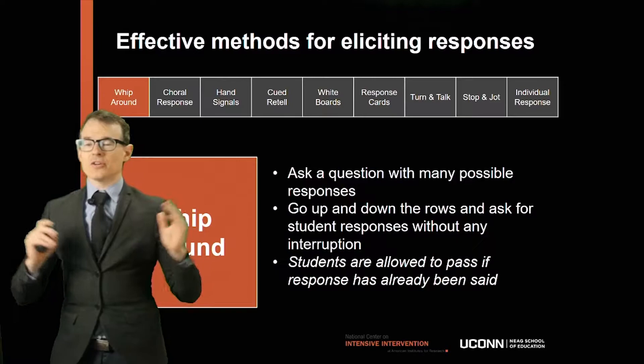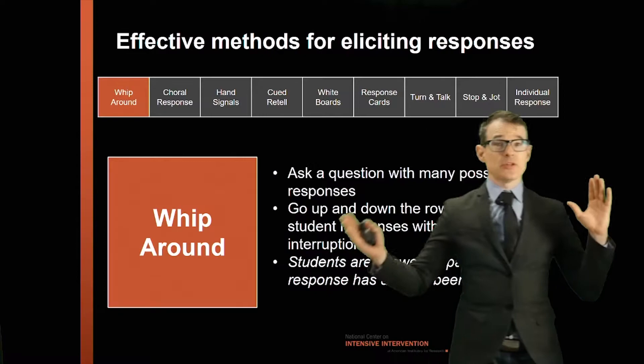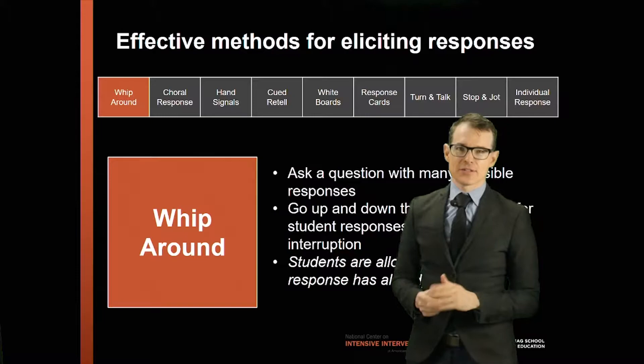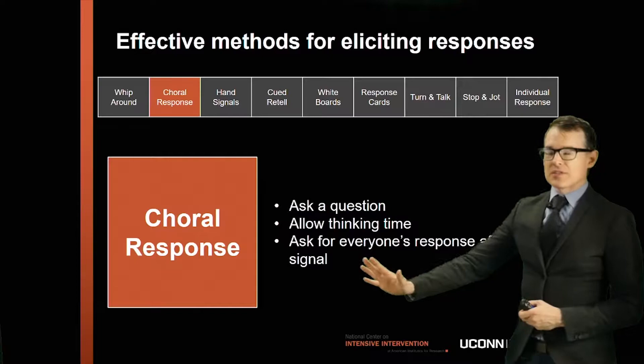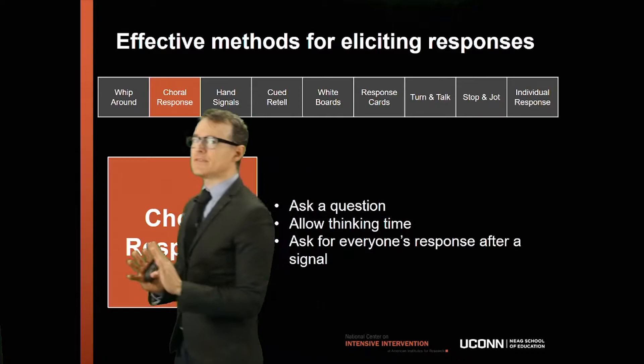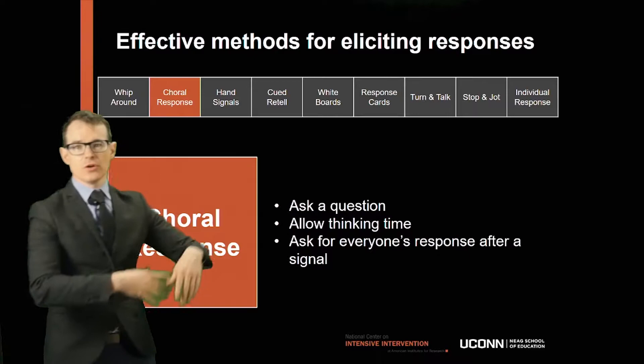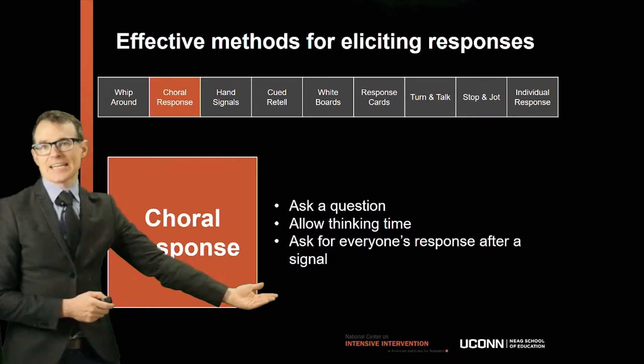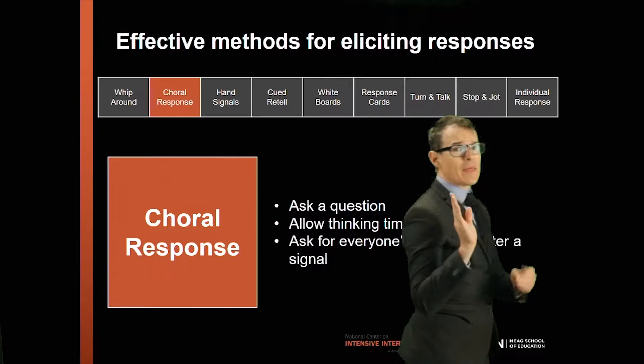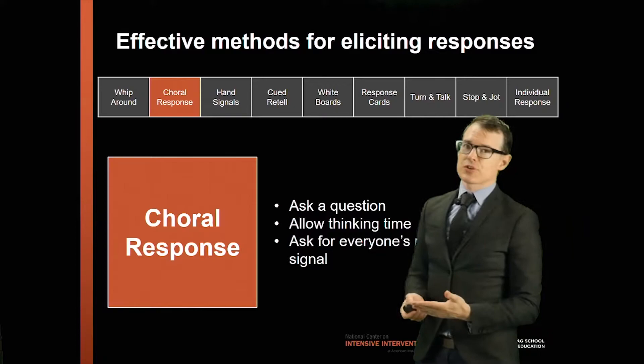Whip around is also a great way to activate prior knowledge. For example, I did a lesson where I asked students what they knew about pirates before we started—a quick whip around gets many ideas out. Choral responses are another great way of eliciting responses, and I recommend you use them very often. This works even through middle school, though in high school it can be trickier. The idea is to ask a question, allow a short amount of thinking time, and then ask everyone to respond after a signal, like putting your hands out.